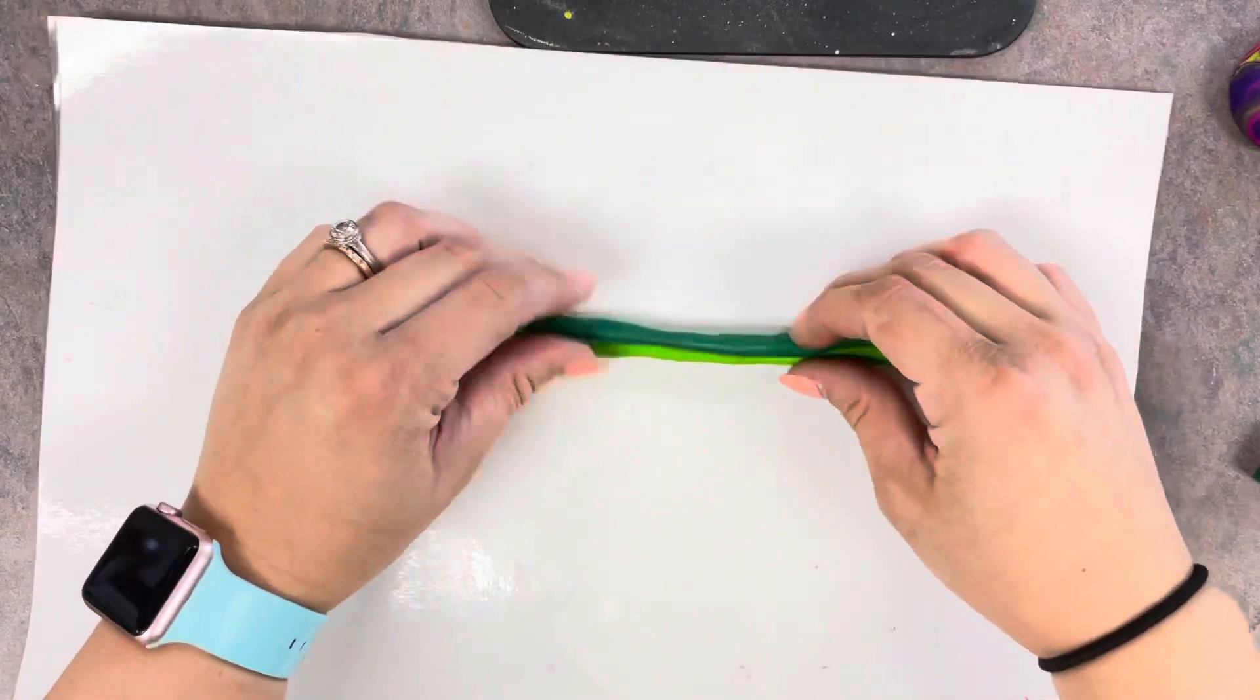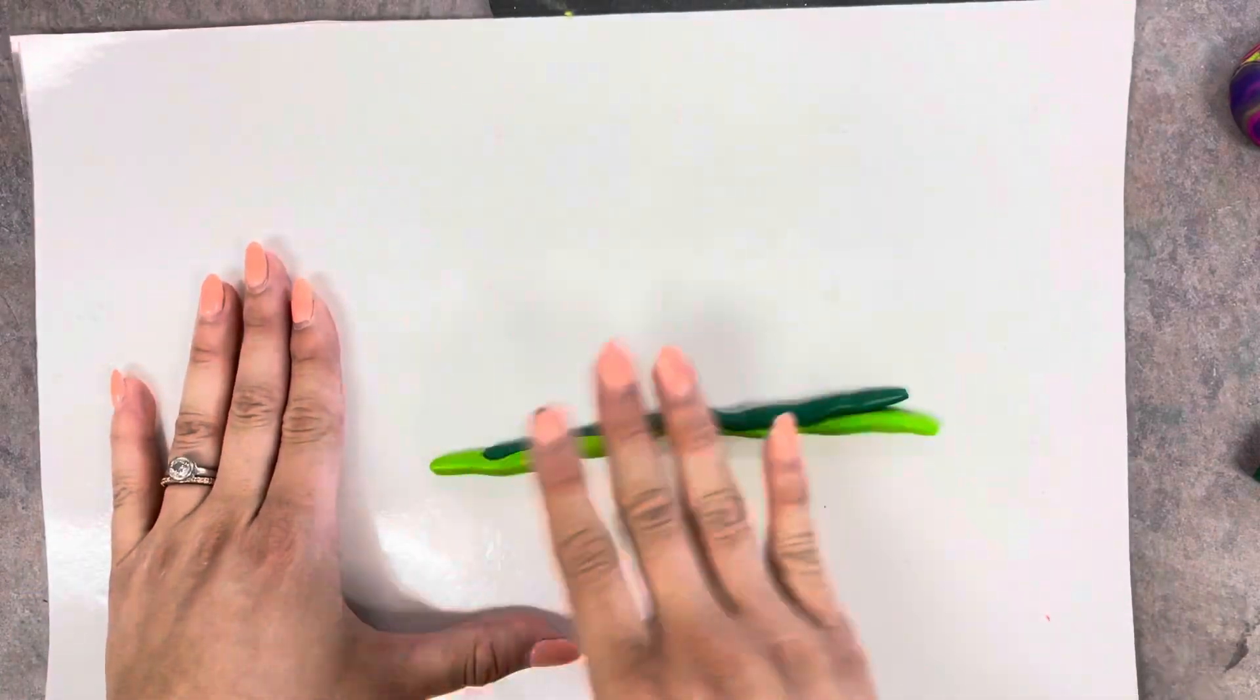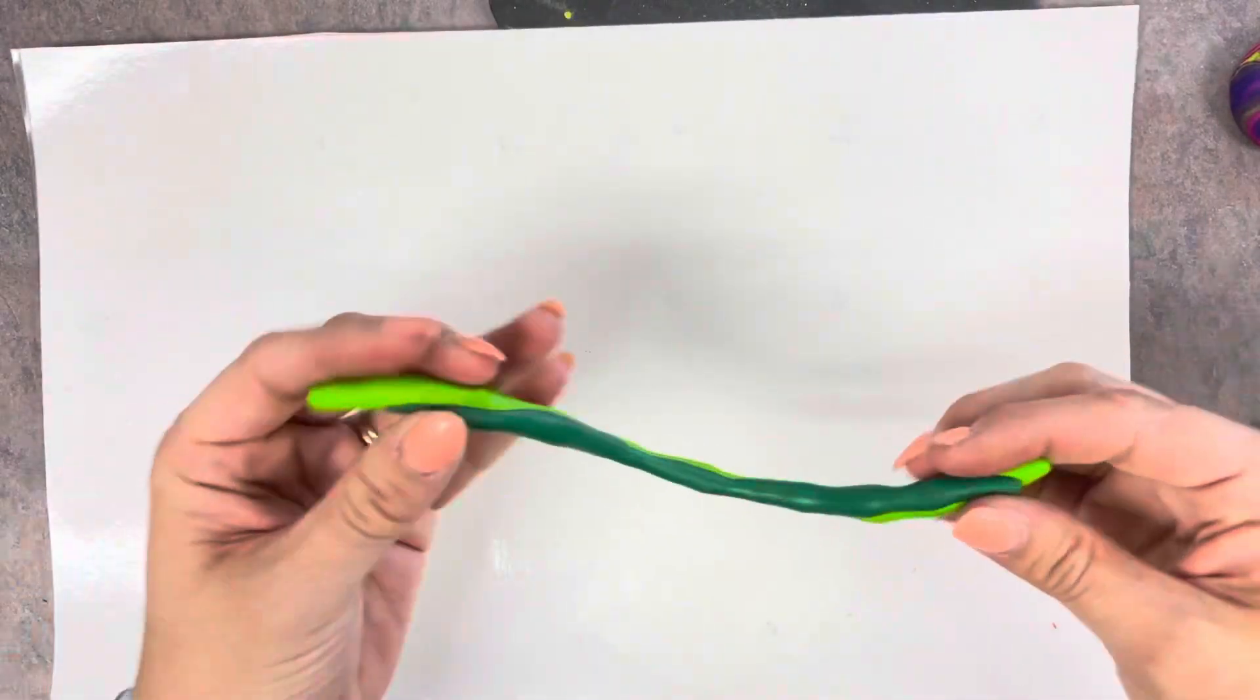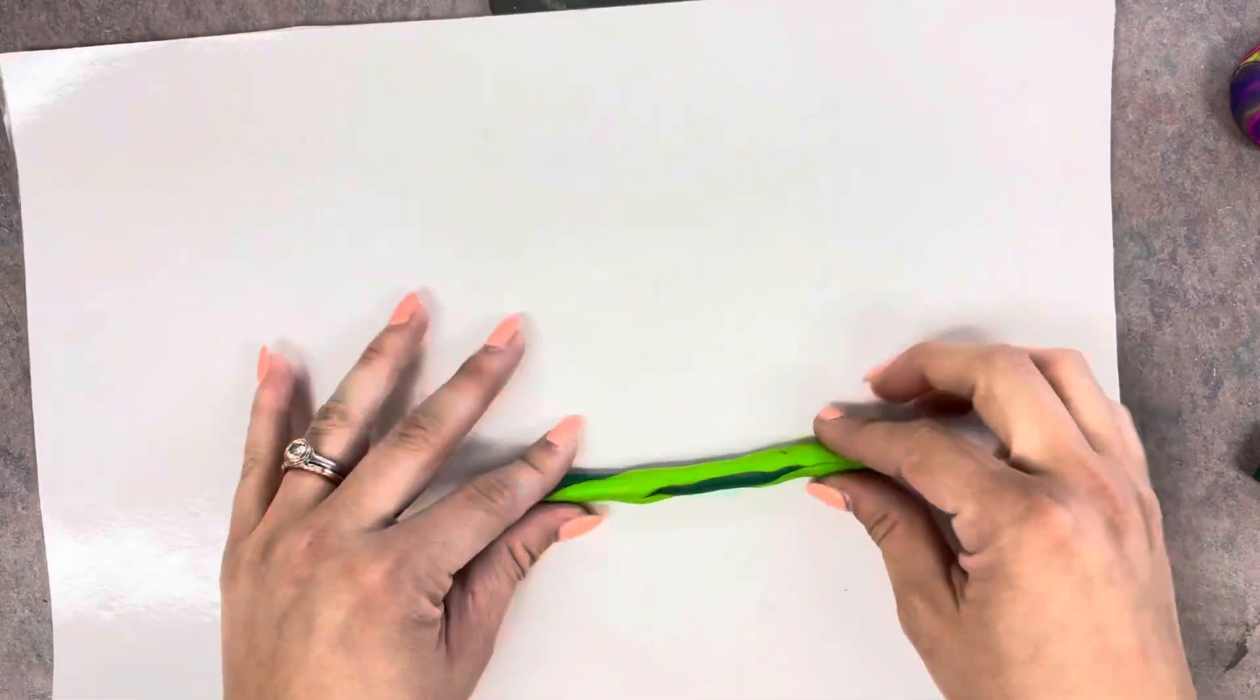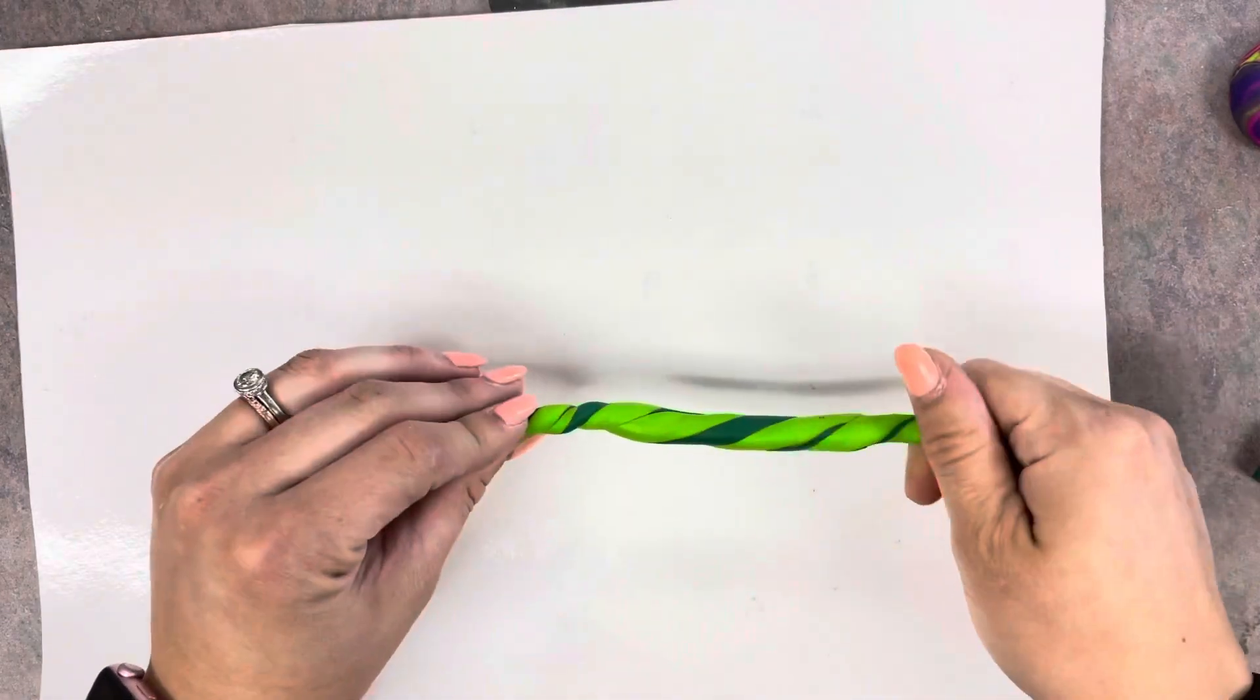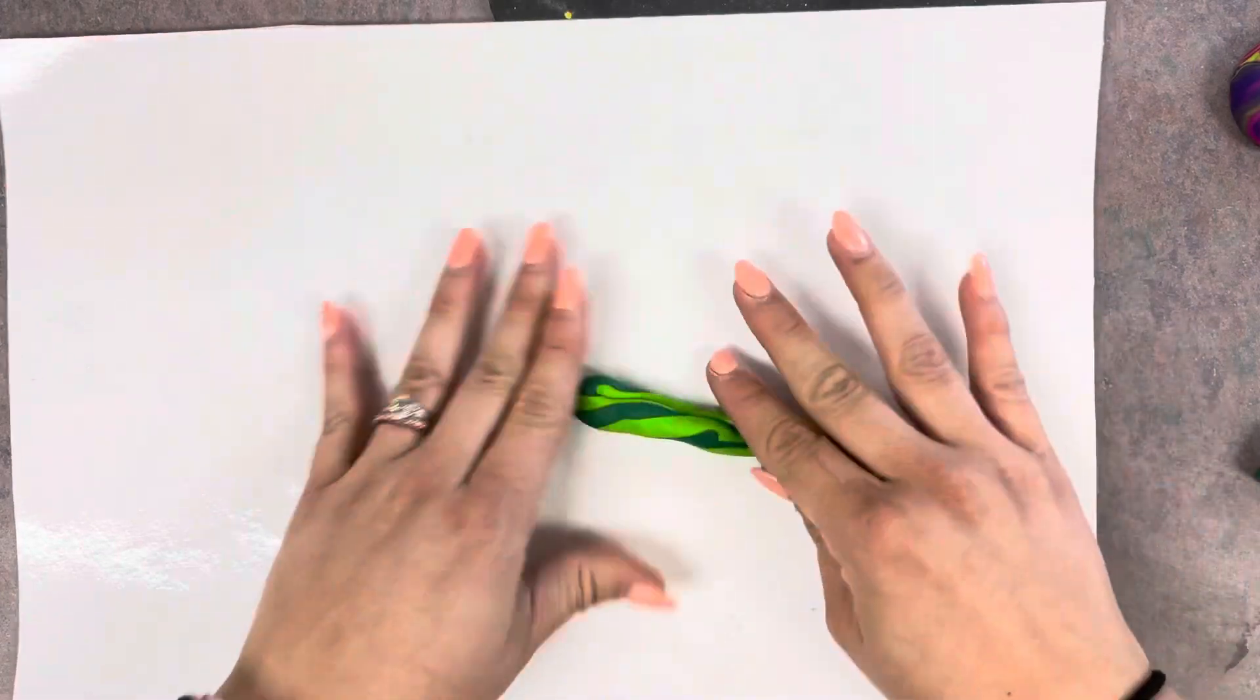Then we're going to put the coils together and roll them together into one longer coil. To make a marbled effect, you can fold your coil in half, roll it again, twist your coil, and roll it again.